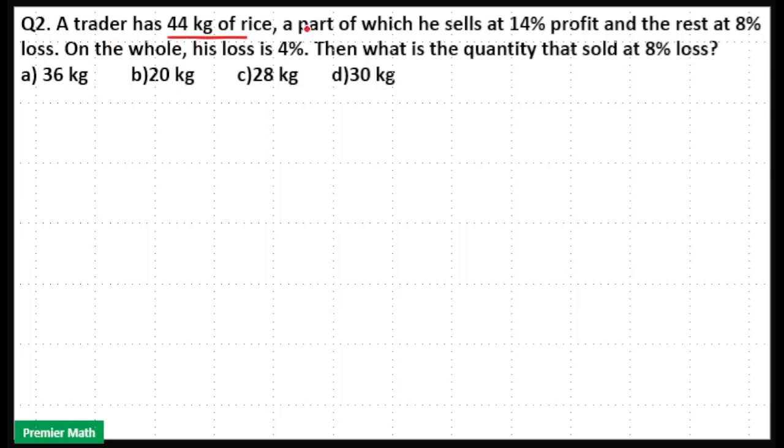A trader has 44 kilogram rice, part of which he sells at 14% profit and rest at 8% loss. On the whole, his loss is 4%. Then what is the quantity that sold at 8% loss?